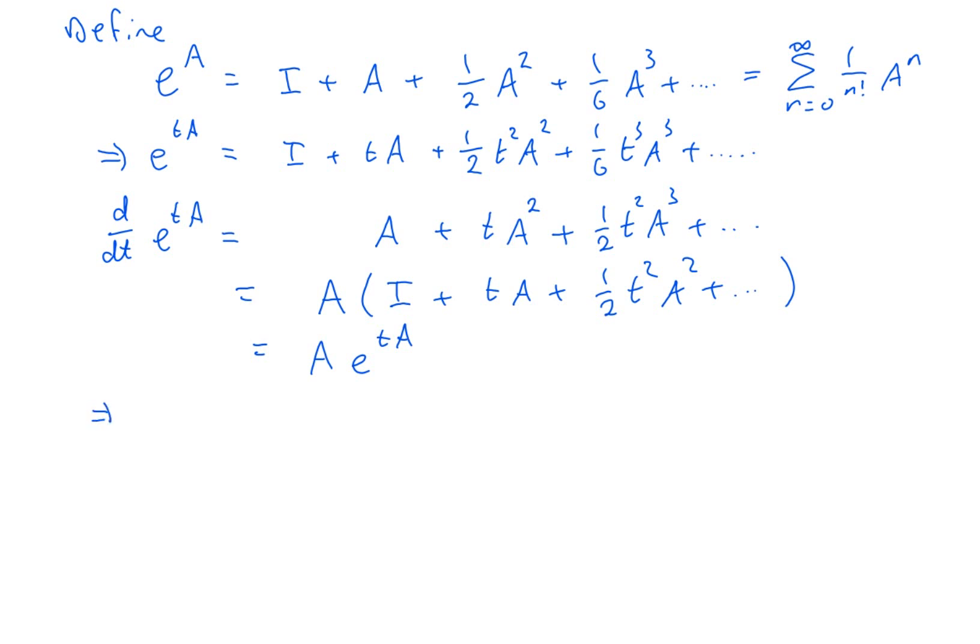Just using that first line there, the definition. That means d/dt of e^(tA)x₀ would be A times e^(tA)x₀, that would be Ax. So I'm done. I've proved that this matrix formula using this matrix exponential gives me the solution of the linear system.